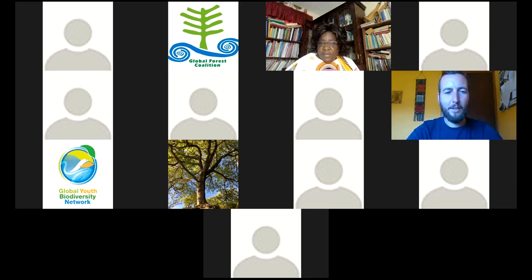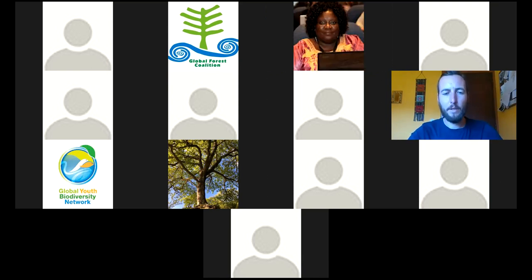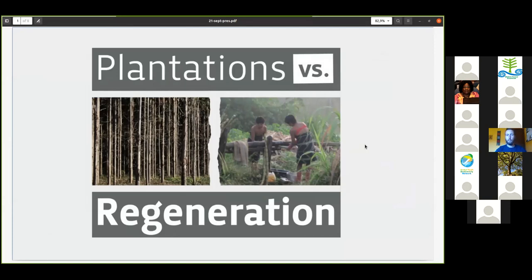Thank you, Lucy. My name is Oliver Munion, and I work for the Global Forest Coalition, based in Portugal. Portugal actually has the highest proportion of eucalyptus plantations by area, proportionally, anywhere in the world, so this issue is very important to me. I'll give a quick overview of the work we've been doing recently, focusing on German climate finance.